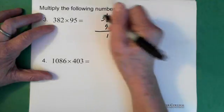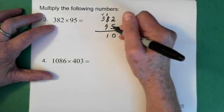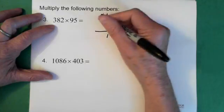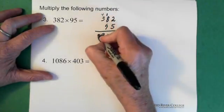5 times 8 is 40 and then we add the 1 so we get 41. So the 1 goes down here and the 4 goes above the 3. 5 times 3 is 15 and we add the 4 and that's 19.